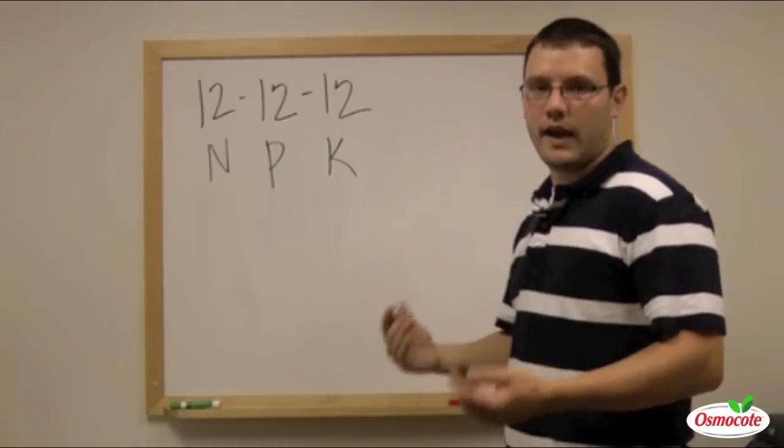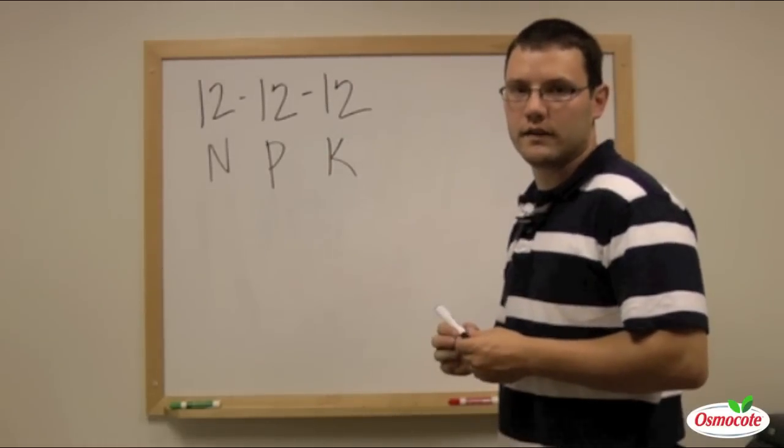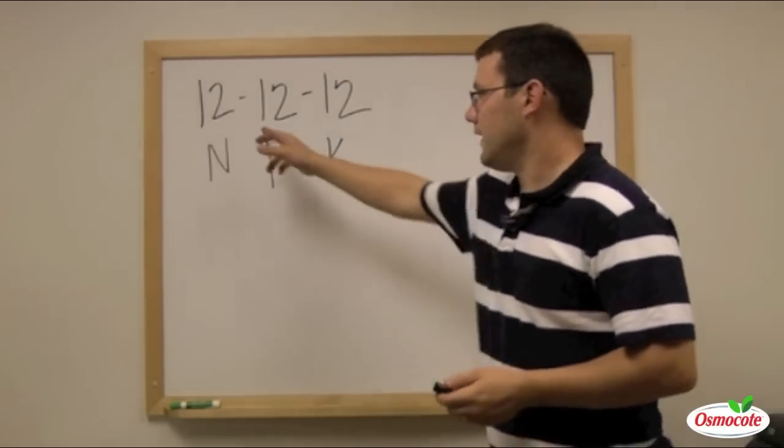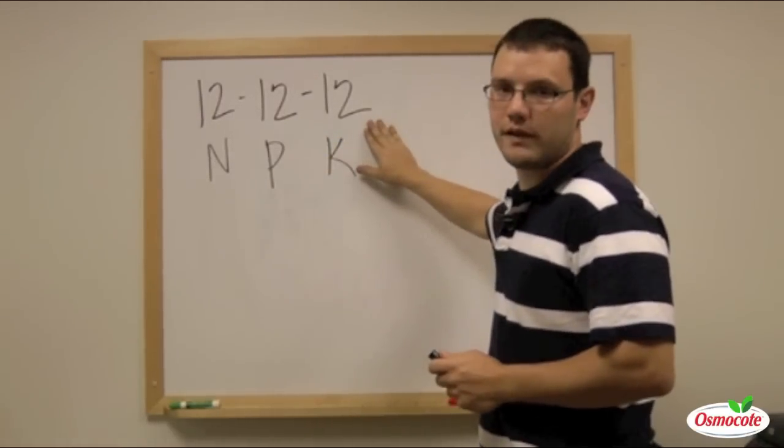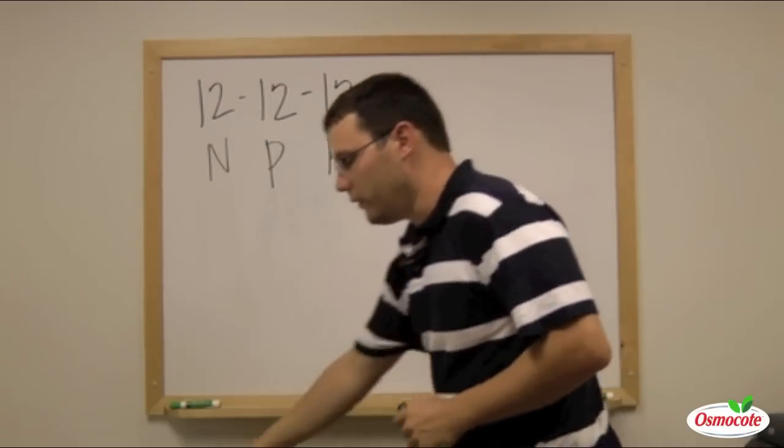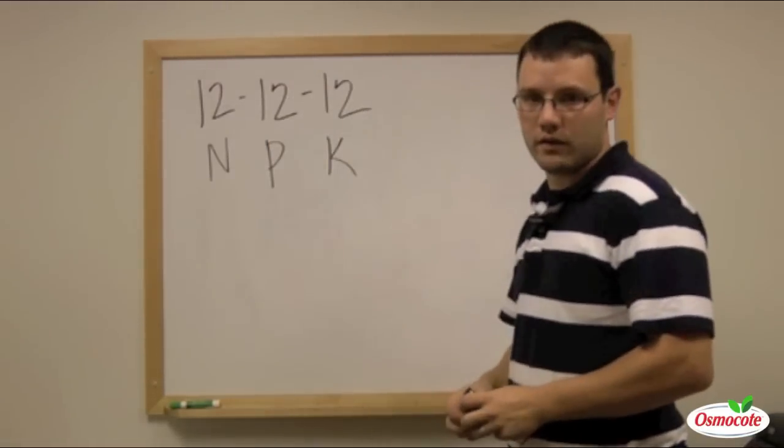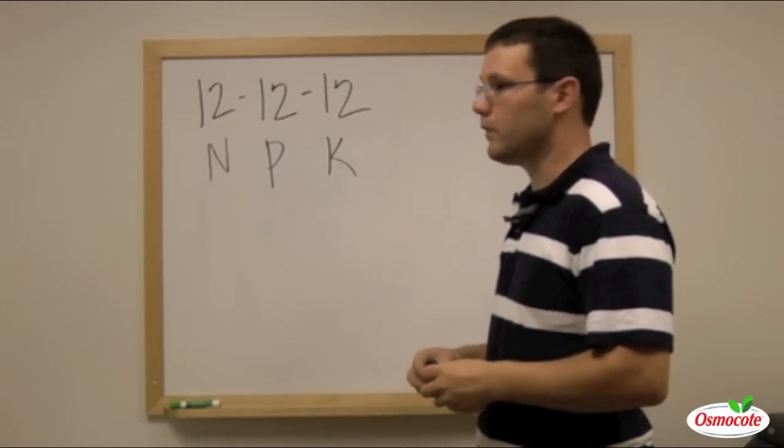So in this example, if we had a 12-12-12 fertilizer, 12% of that bag is actually nitrogen, 12% is phosphorus, and 12% is potassium.